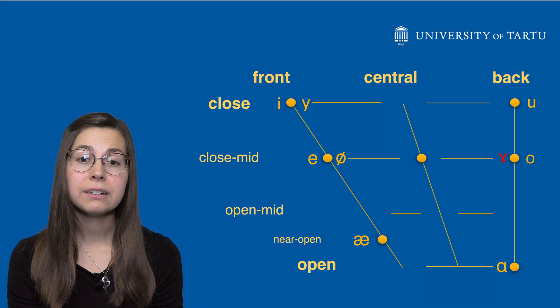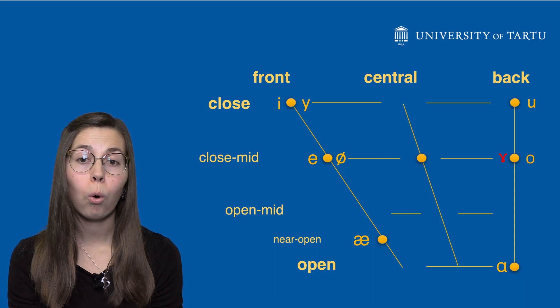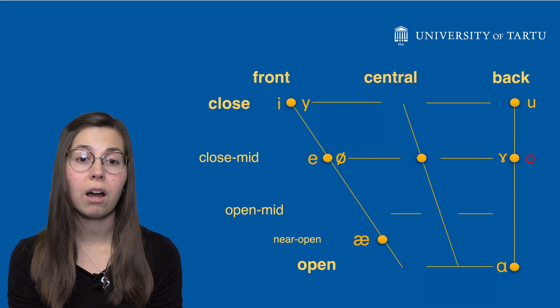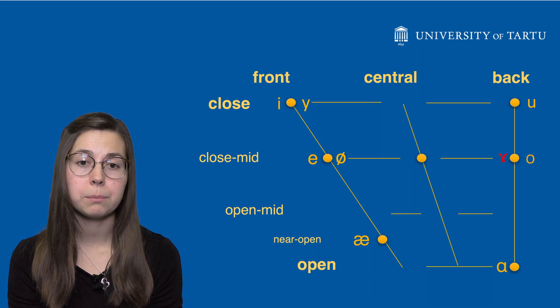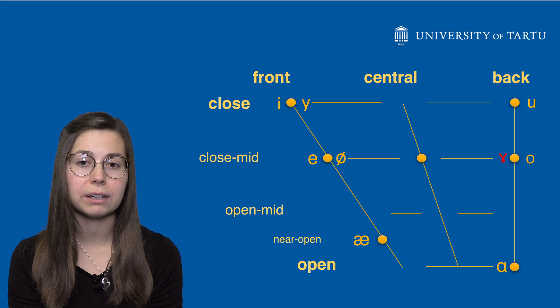Note that õ is pronounced differently from ö. õ is pronounced with unrounded lips, while ö is pronounced with rounded lips.